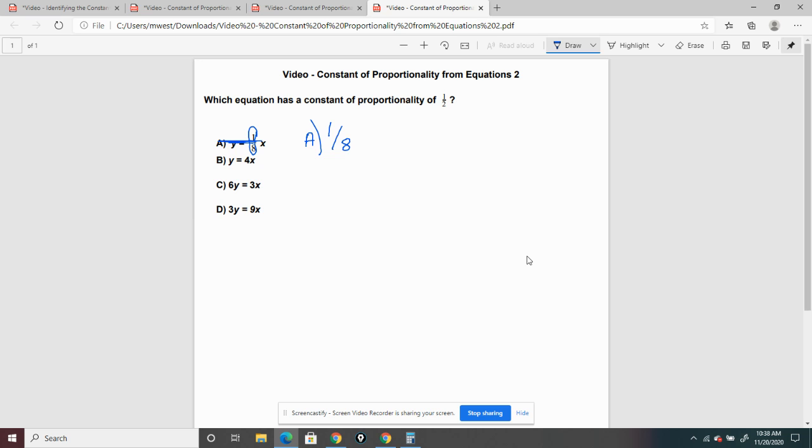And B, simply just looking at it, we can tell the constant of proportionality is four. And we're looking for one-half, so we can mark that out as well.